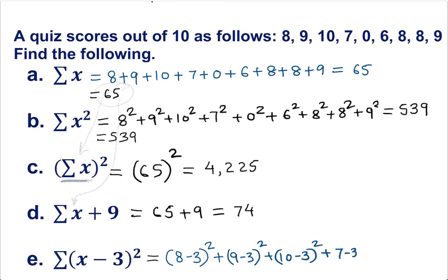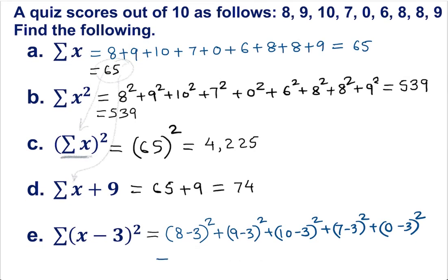Plus 7 minus 3 squared, plus 0 minus 3 squared, and I need some space, plus 6 minus 3 squared, plus 8 minus 3 squared, plus 8 minus 3 squared, and finally plus 9 minus 3 squared.